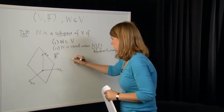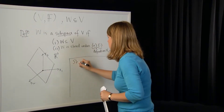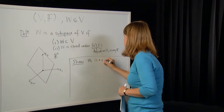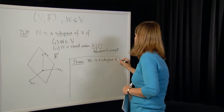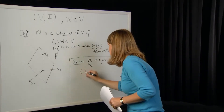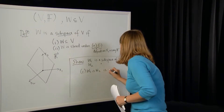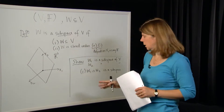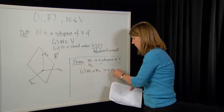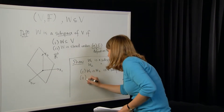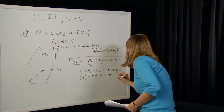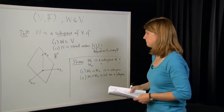You can show the following interesting facts, though we won't do the proof. If W1 is a subspace of V and W2 is a subspace of V, then the intersection W1 ∩ W2 is also a subspace. That makes sense intuitively — the intersection contains elements in both W1 and W2. But interestingly, the union W1 ∪ W2 is not necessarily a subspace.